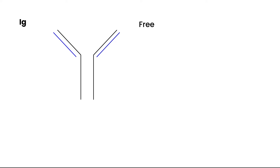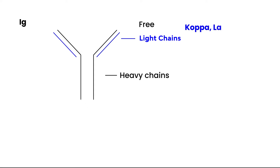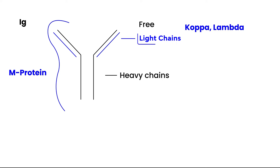The immunoglobulin structure is important to understand. Essentially, there are two heavy chains and two light chains — the heavy chains are the larger ones, and the light chains have two types: kappa and lambda. This whole molecule is referred to as an M protein. But if you find these light chains just by themselves, they are given a special name called Bence Jones protein.